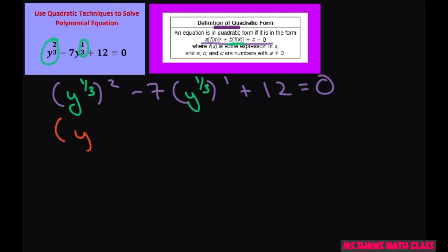So now all we have to do is factor, and instead of y we're writing y to the one-third because that's what we have.